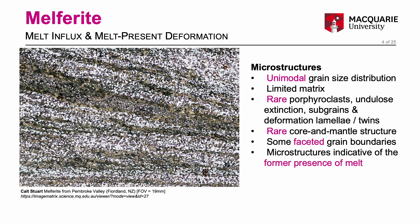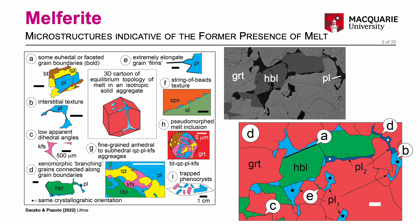The key microstructural characteristic of melphorite and high strain zones of former melt flux are abundant microstructures indicative of the former presence of melt. This summary figure is from our 2022 review paper and shows a range of microstructure indicators indicative of the former presence of melt.